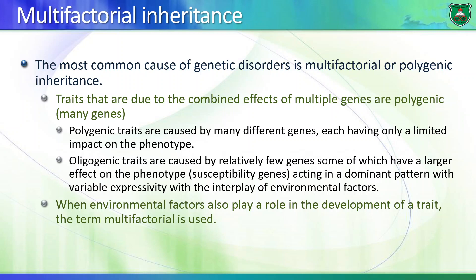If we're talking about a condition caused by a few genes, we call it oligogenic traits. Poly indicates a larger number than oligo. If you have involvement of a non-genetic factor, such as the environment, then we call this condition a multifactorial inheritance.